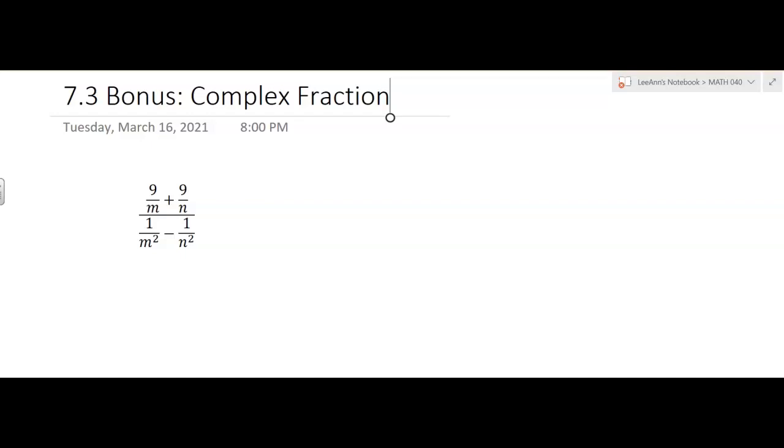So what I do is I look at all the denominators, so the little denominators: M, N, M squared, and N squared, and I come up with the LCD. Well, in this case, it's going to be M squared N squared. So all of those have a factor of M or N or M squared or N squared.